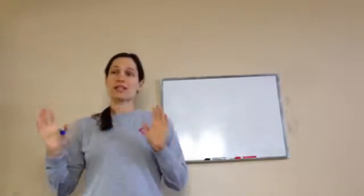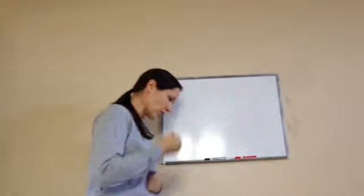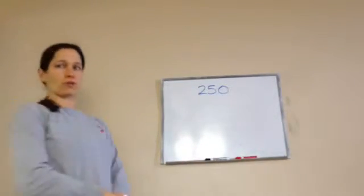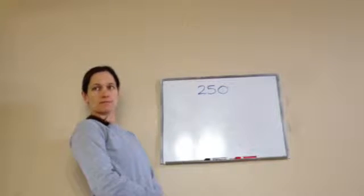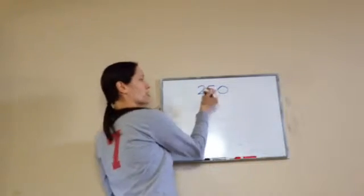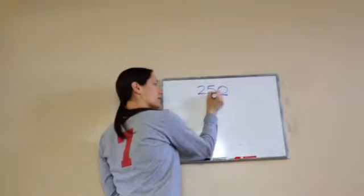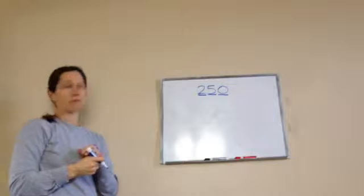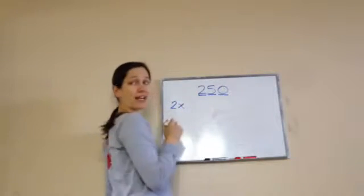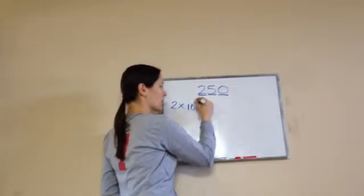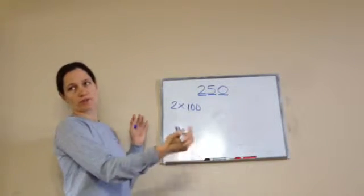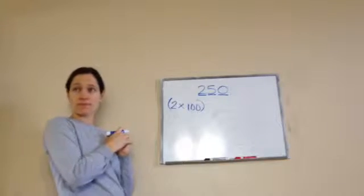You learned expanded notation last year so you probably know it, but let's do a quick review. If I were to write the number 250 in expanded notation, do you remember what we would do? We would write 200. You're right — two times 100. So what you're going to do is identify the place of each digit: ones place, tens place, hundreds place. Take the first digit, two, and say two times whatever place it's in — hundreds. Two times 100 is 200.